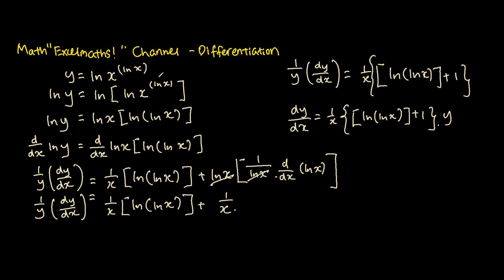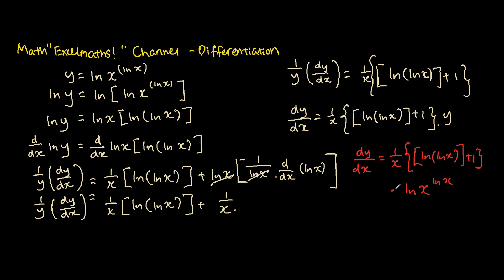Now we know that y equals ln x to the power of ln x, so substituting back, the final answer is: dy over dx equals 1 over x, times ln(ln x) plus 1, times ln x to the power of ln x. That is the final answer to the differentiation of y equals ln x to the power of ln x.